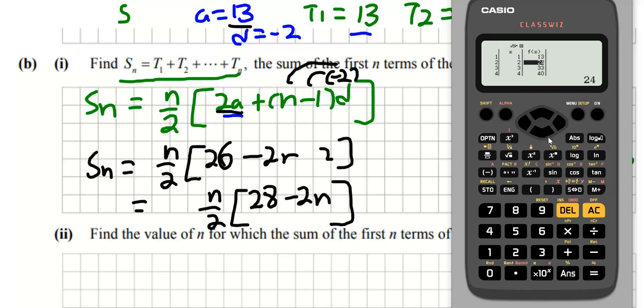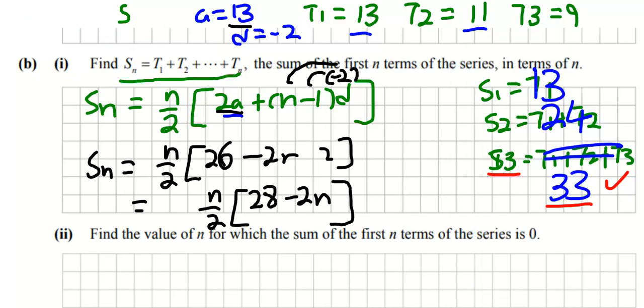Now what's going to happen after a while is you're going to notice that they're going to start going downhill, so for example S7 is 49 and then it's going to go all the way downhill and eventually going to become negative. Now the reason for that is that eventually you're going to be adding on terms that are negative.